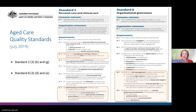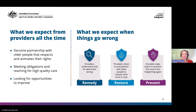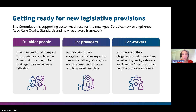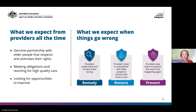Looking at the current standards, infection prevention is assessed particularly against standards 33B, 33G, 83D and 83E, where requirements become very focused. What we expect from providers at all times is genuine partnership with older people that respects and animates individual rights. We also expect providers to meet their obligations and reach for high-quality care, always looking for opportunities to improve. When things go wrong, we expect a remedy, restoration, and then prevention.